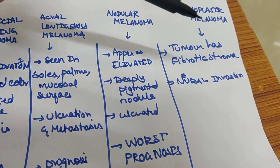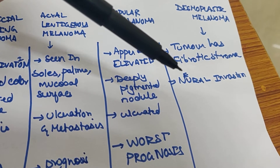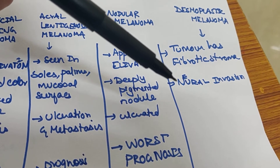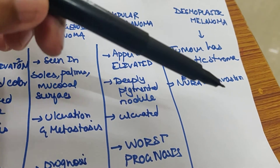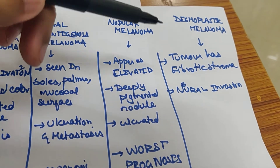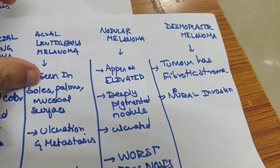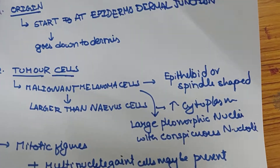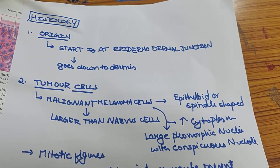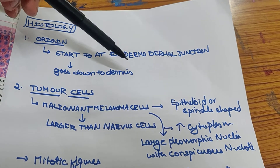Desmoplastic melanoma has a fibrotic stroma and also shows neural invasion.